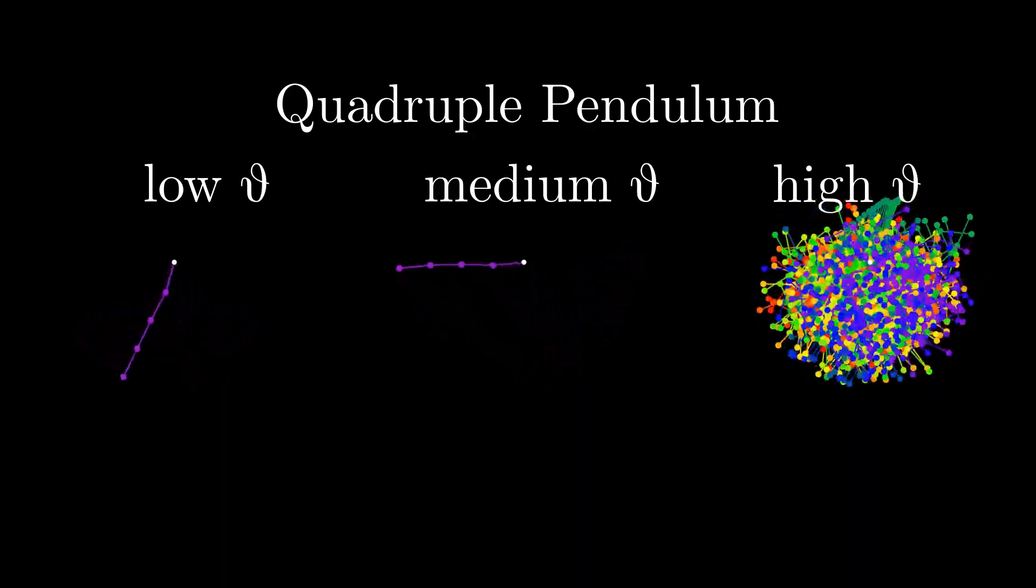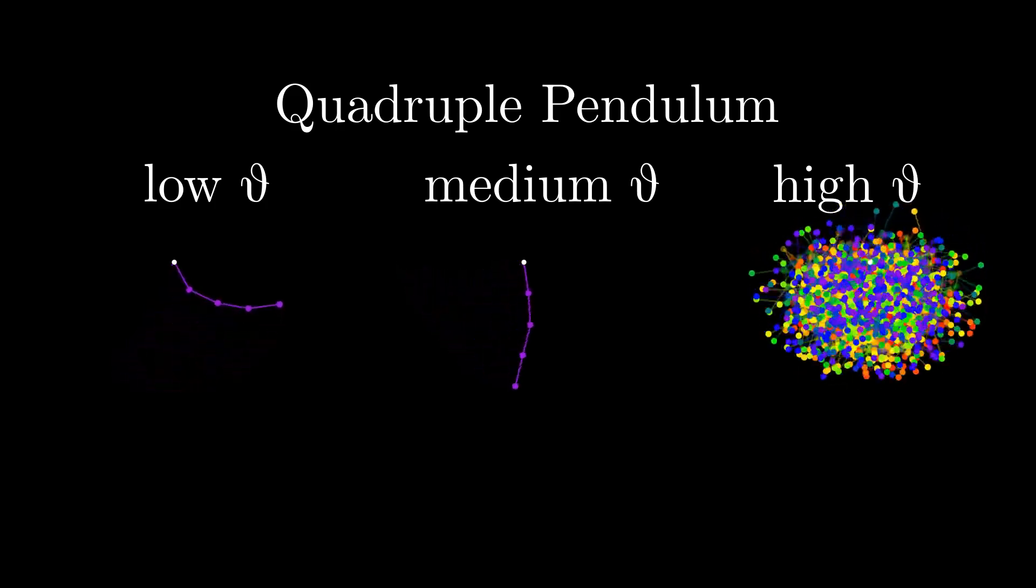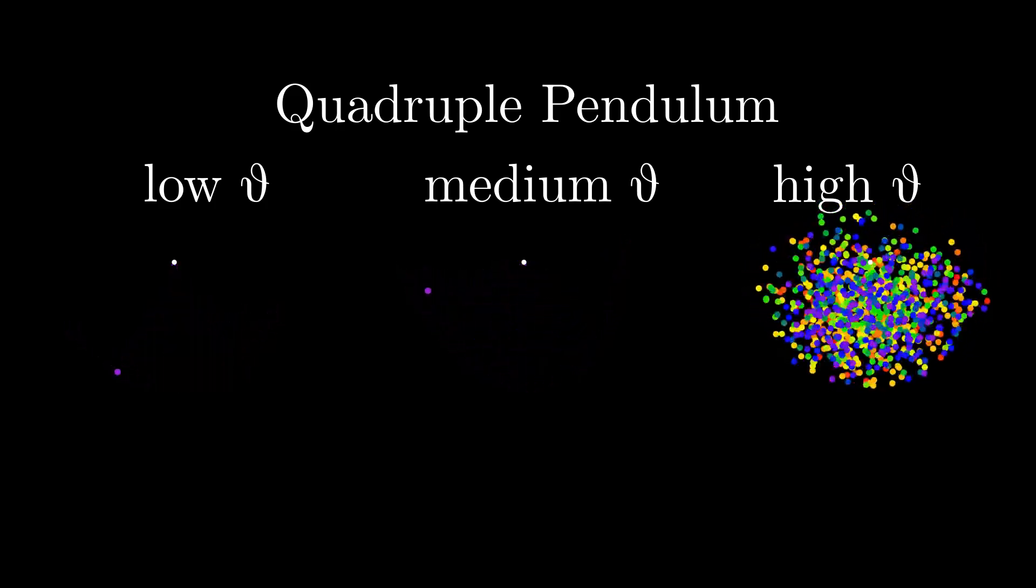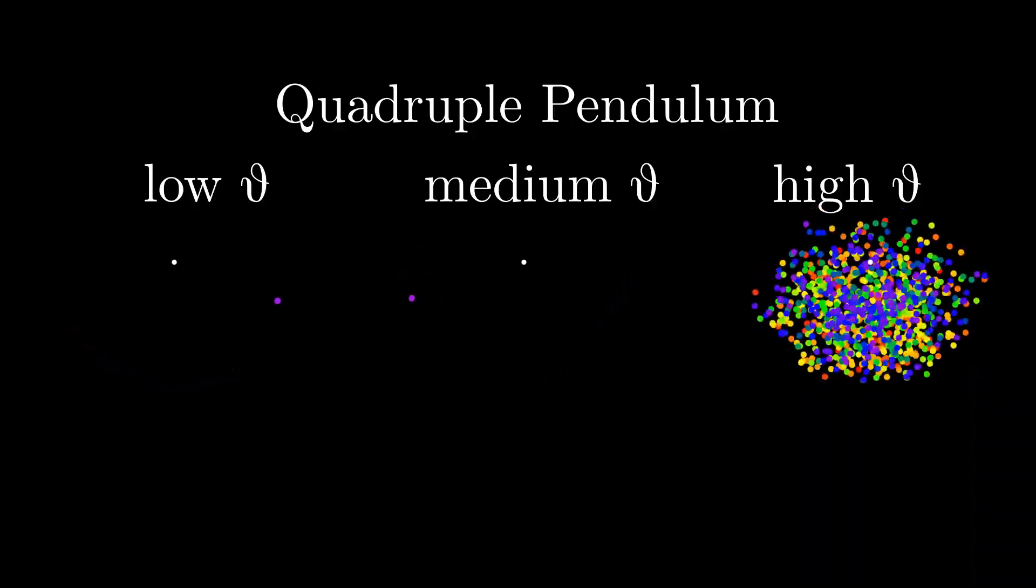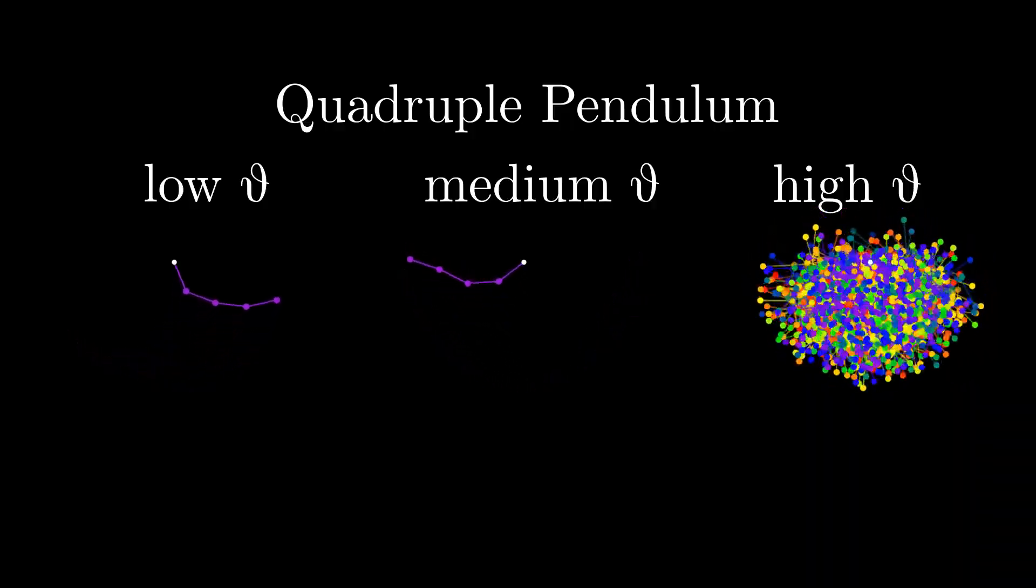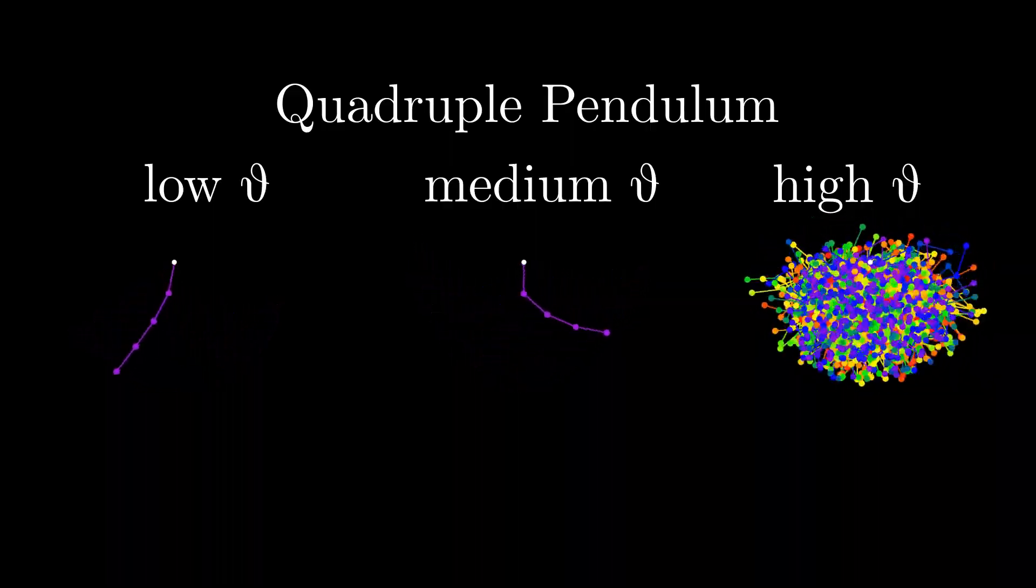For some reason, the ones with the high energy on the right diverge super quickly, but the other ones never diverge. At least not in the first 35 seconds for which I ran this simulation. I'm sure that they would diverge at some point, but I would have to run the simulation much longer, so we won't see that.